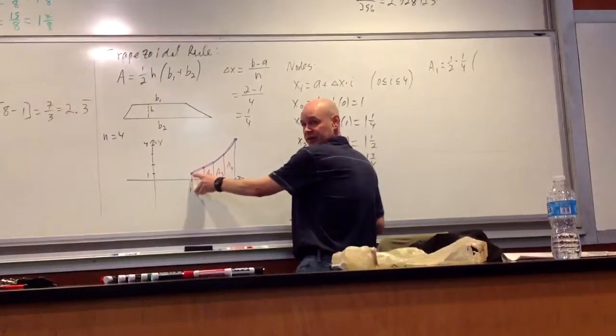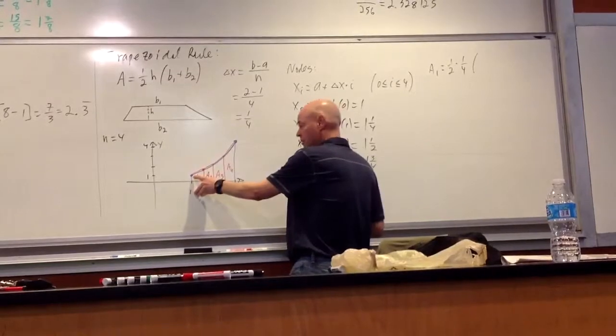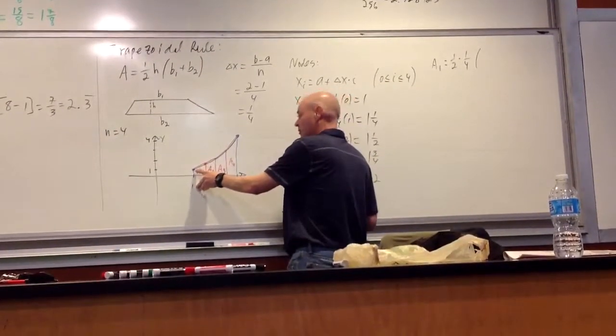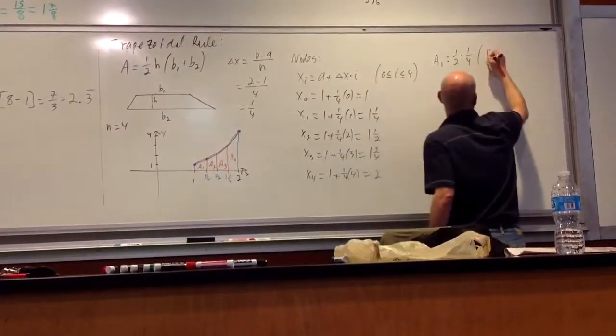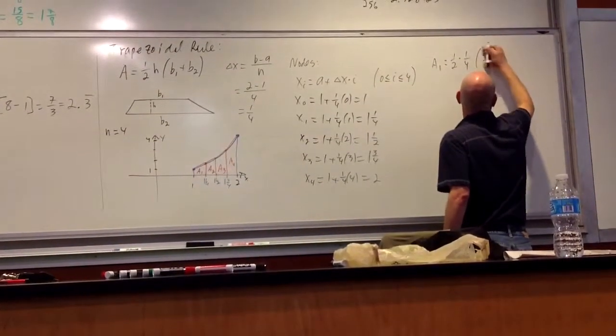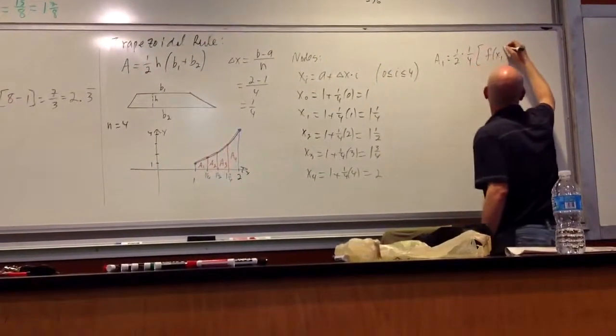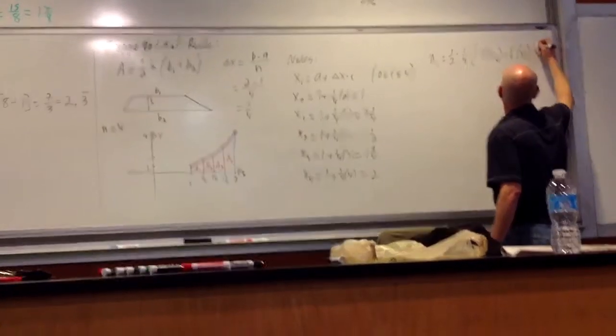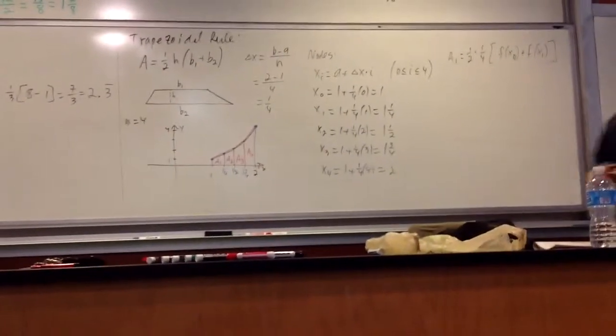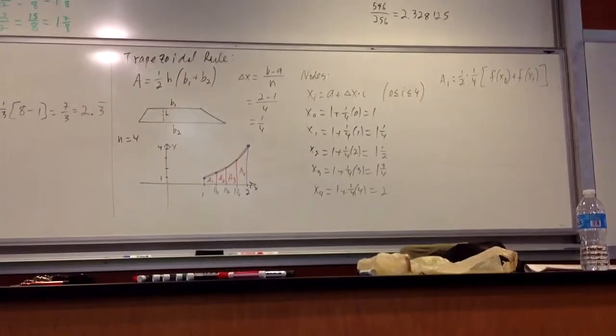This is f of 1, right? F of x of 1. F of x naught, pardon me. This is f of x of 1. Please take a minute and make sure your neighbor understands how I'm matching it up with the trapezoid forming.